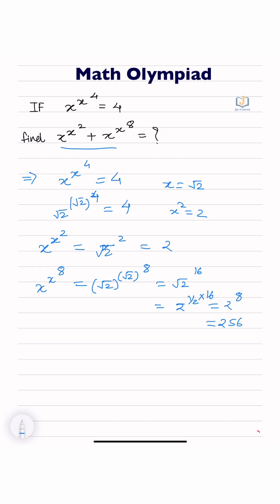So we get the answer: x to the power x to the power 2, plus x to the power x to the power 8, is equal to 2 plus 256, which is equal to 258. So the answer is 258.